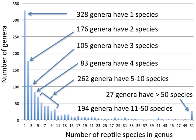Each genus should have a designated type, although in practice there is a backlog of older names without one. In zoology, this is the type species and the generic name is permanently associated with the type specimen of its type species. Should the specimen turn out to be assignable to another genus, the generic name linked to it becomes a junior synonym and the remaining taxa in the former genus need to be reassessed.